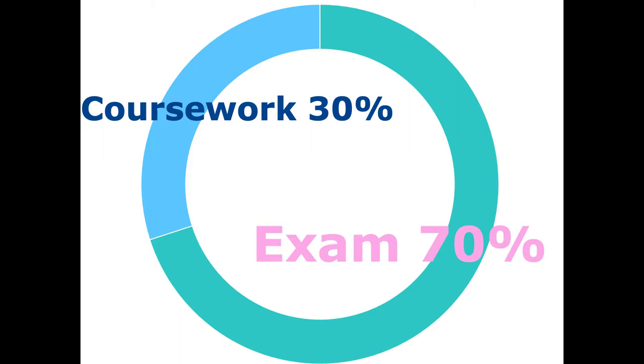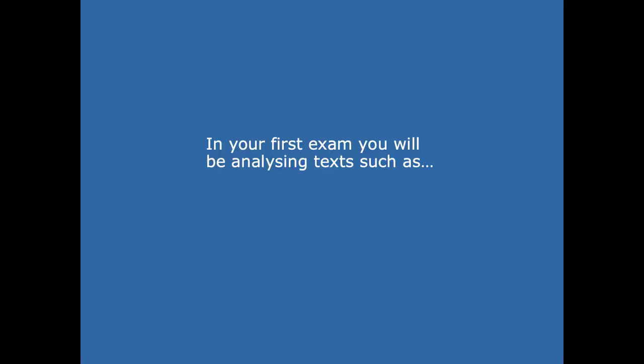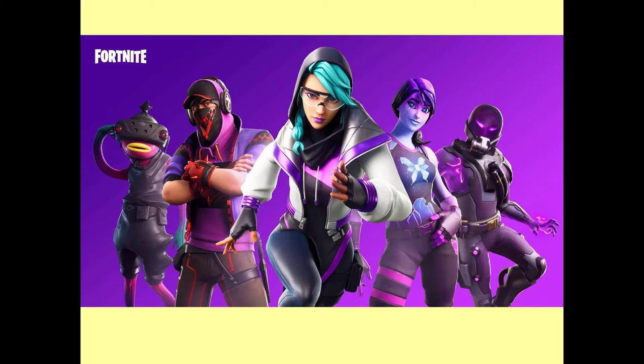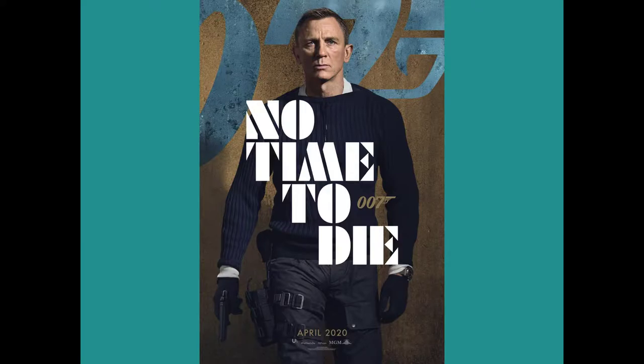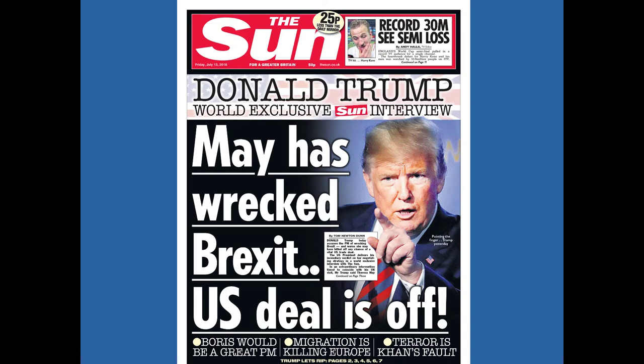The course breaks down as 30% coursework and 70% exam. For the exam, we learn about set texts — the exam board sets them, we learn about them, and then you get tested on them. These include Fortnite, a magazine aimed at Black British women called Pride, some print advertisement, marketing for James Bond, and newspapers. That covers the first part of your first exam.